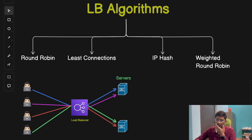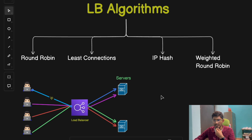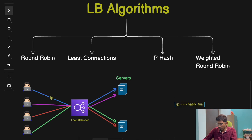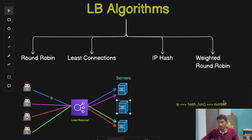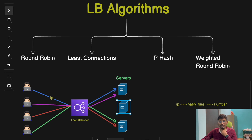Next we have the IP hash algorithm. The load balancer takes the client's IP address from the incoming request and passes it to a hash function, which outputs a specific number — essentially the server number to which the request should be routed. This way, the same user consistently goes to the same server, because as long as the client's IP address doesn't change, the hash function always outputs the same server number.